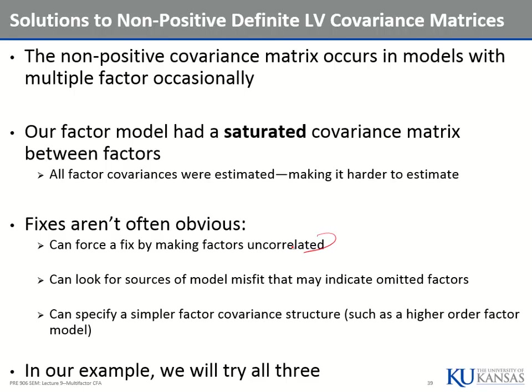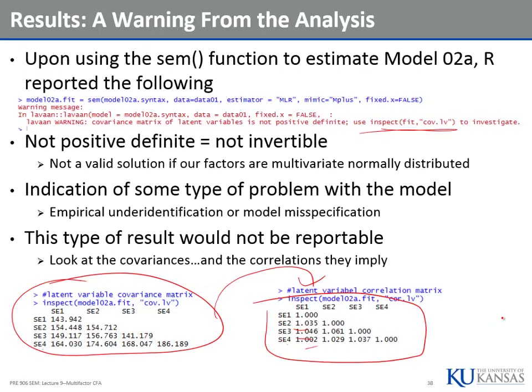Once we look for model misfit, we could add more factors, drop items, or work things out. We could also simplify our model with a factor covariance structure that has a higher order factor. The reason this is an issue is sometimes related to how many factors we have — we may have overfit our data. We have six covariances and six correlations to estimate, plus the factor variances, giving us ten things total to estimate. A simpler model cuts down on what we need to estimate, which usually makes it invertible.